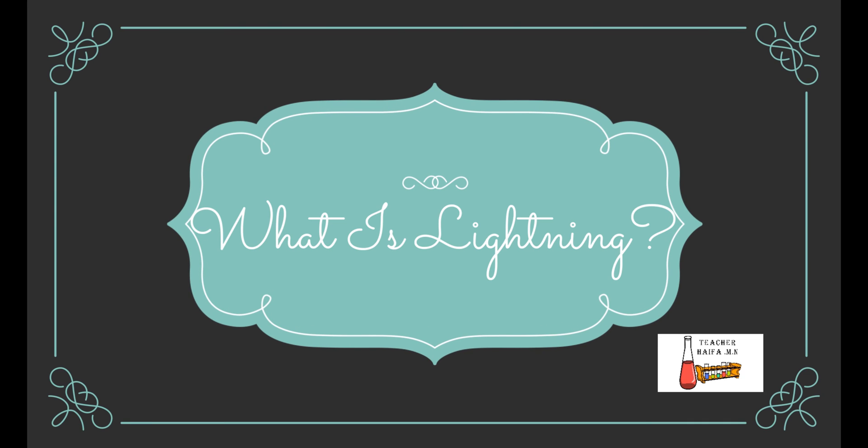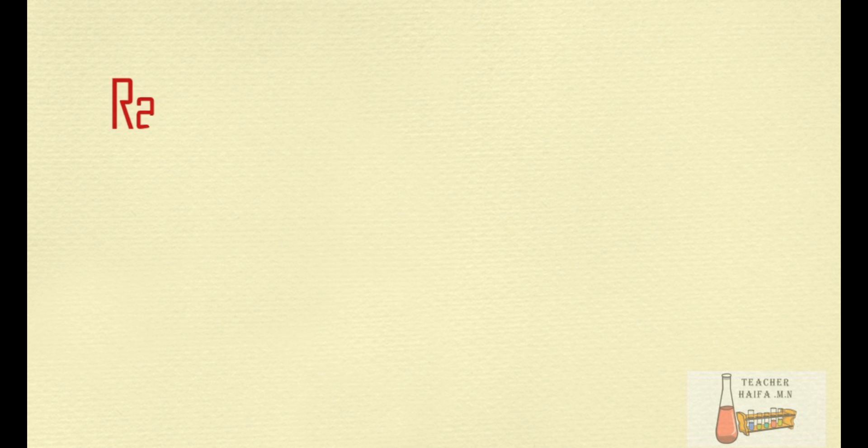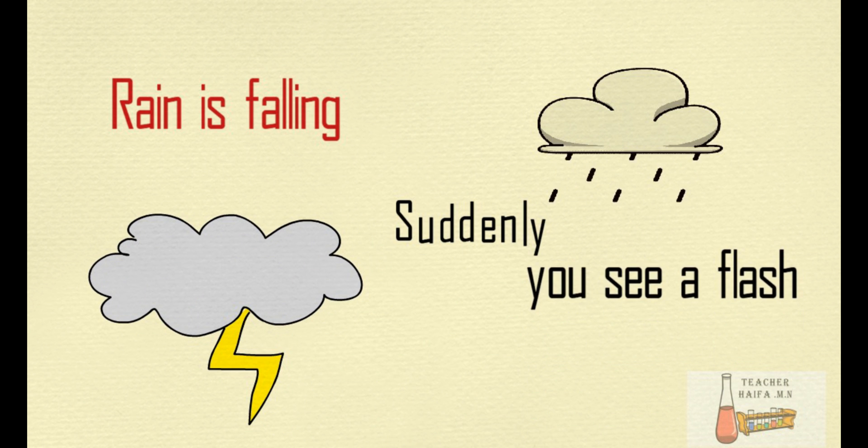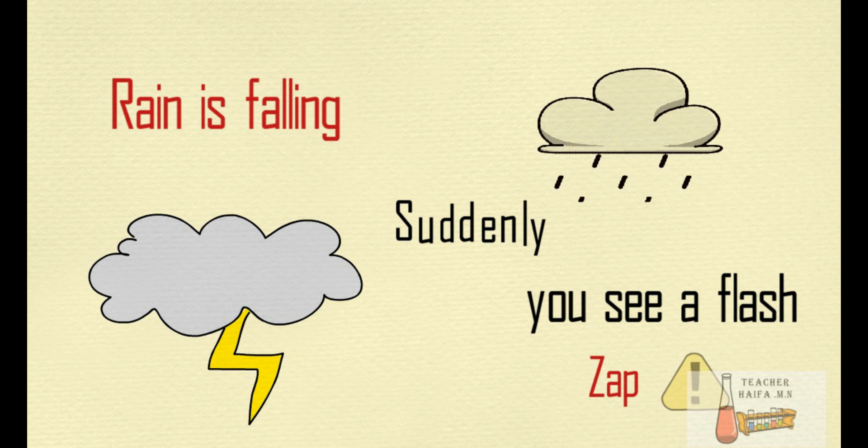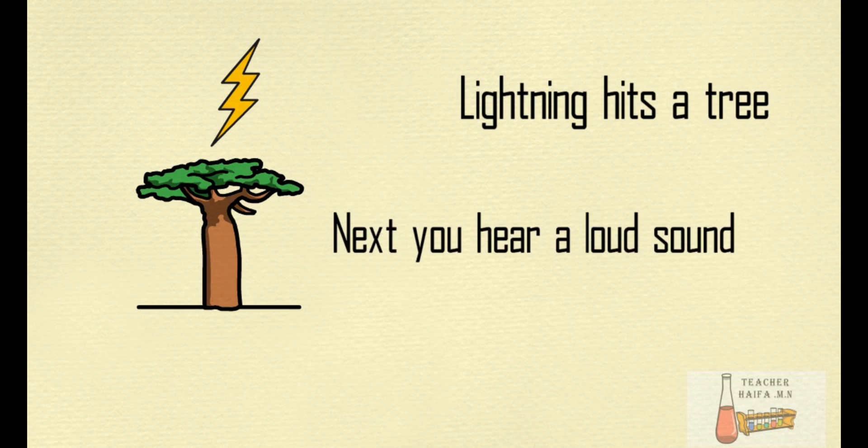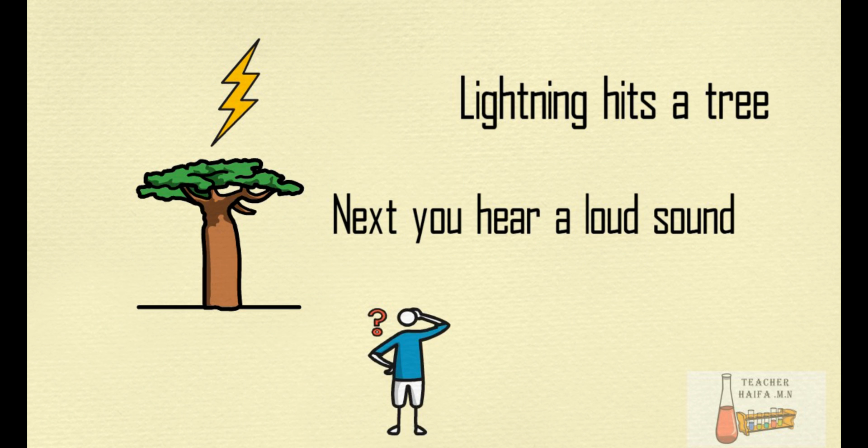What is lightning? Rain is falling. Suddenly, you see a flash. Zap! Lightning hits a tree. Next, you hear a loud sound. What is happening?